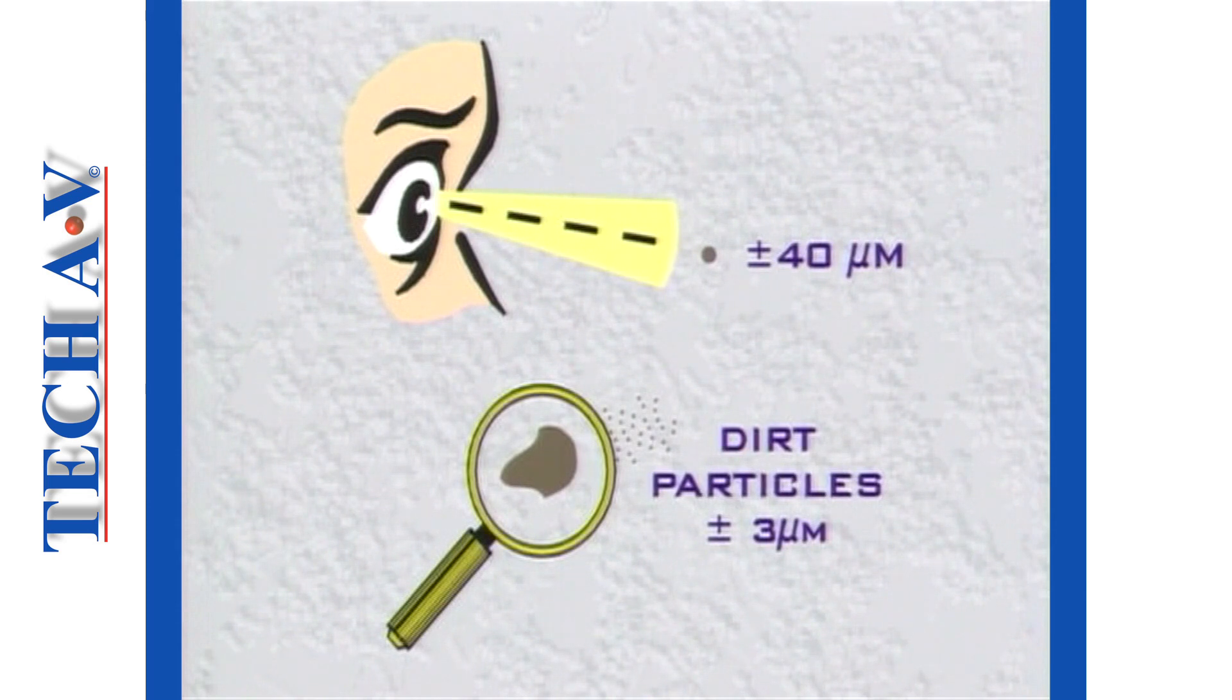Dirt or dust that is harmful to a hydraulic system is generally less than 40 microns. In other words, we cannot see the particles that cause the most damage in a system.